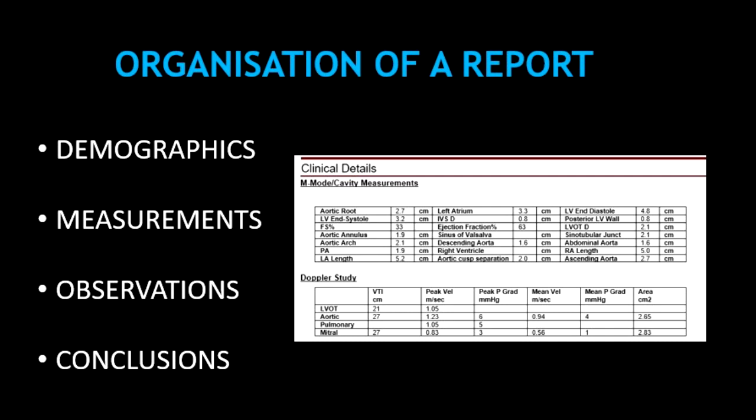And this is how to build your report. Basically, you can divide your report into four different sections: one section for the demographics, another section where you can write all the measurements, another section for any observations related to the echocardiogram, and finally, a section for your conclusions.